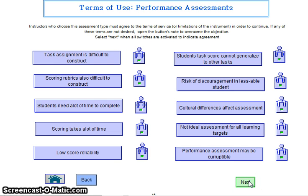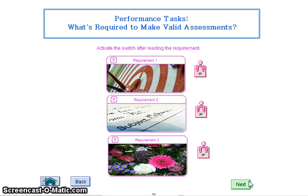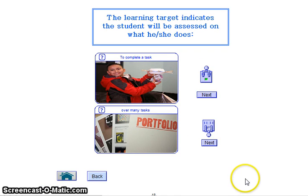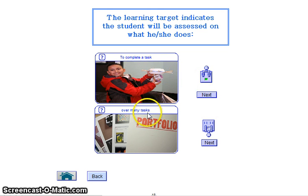All of the switches are activated. Then, how do we make them valid? I've given the three requirements for making them valid here. We're going to select completing one task as opposed to many tasks.